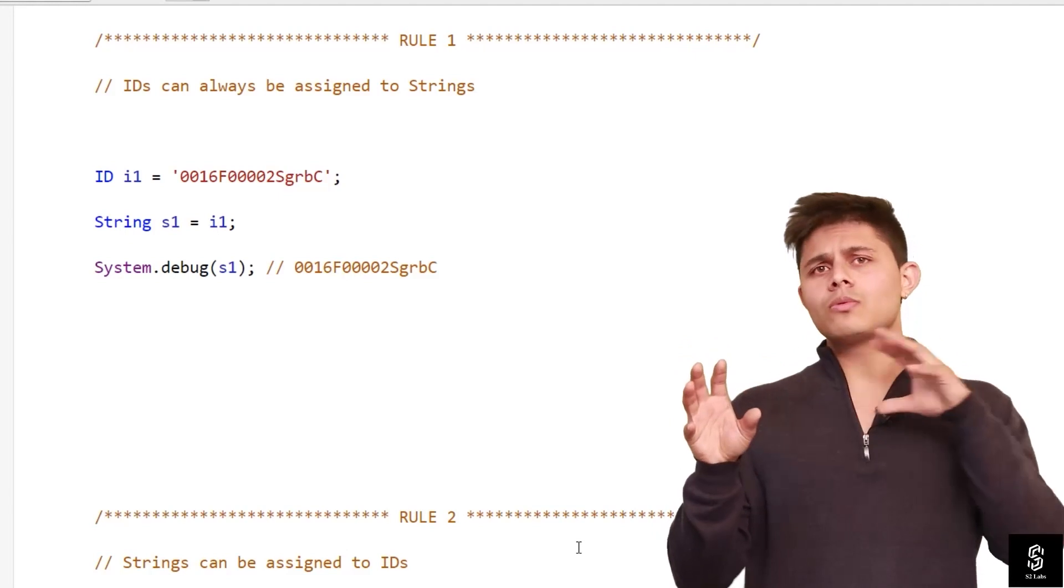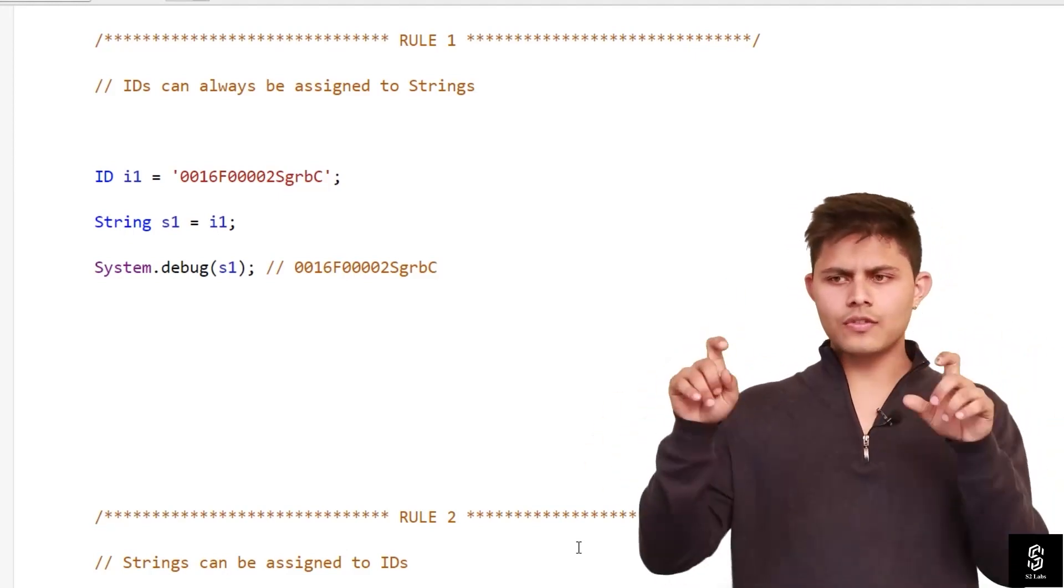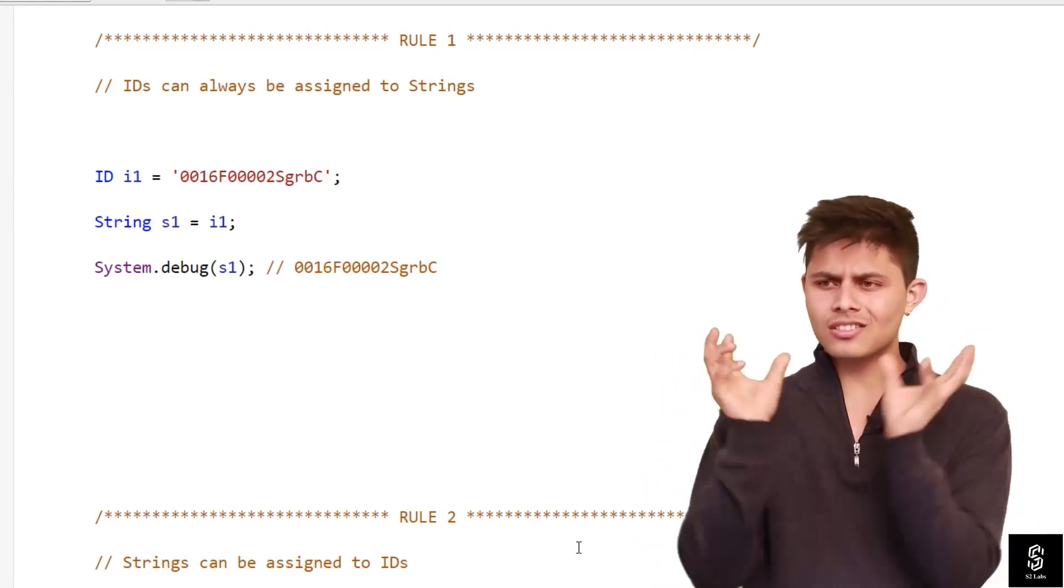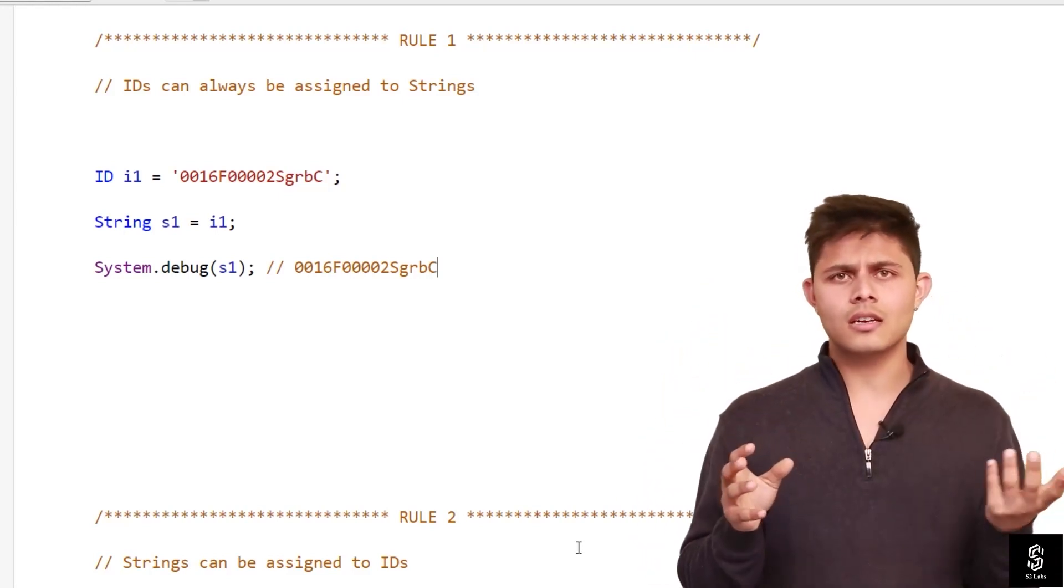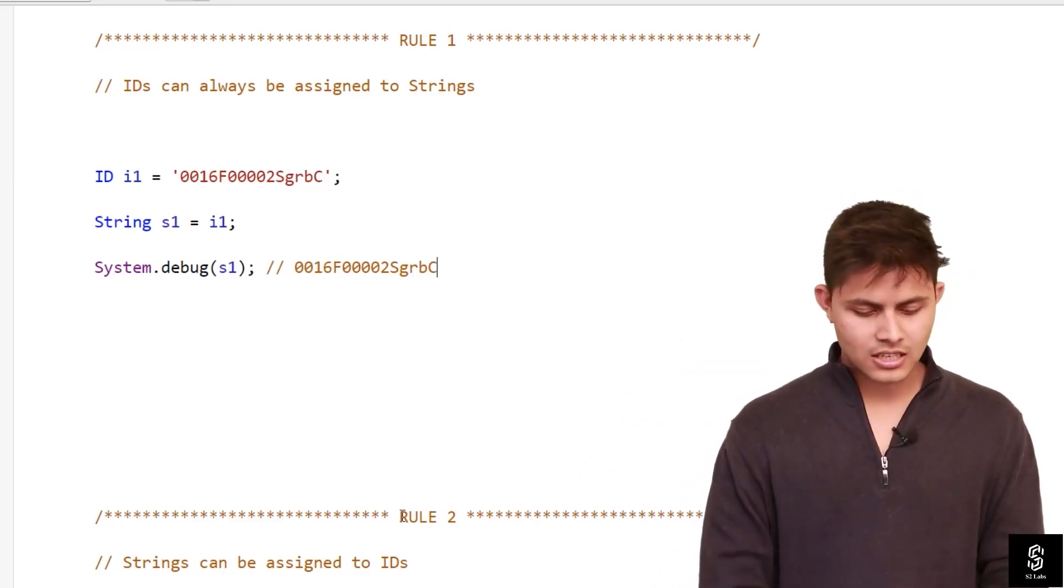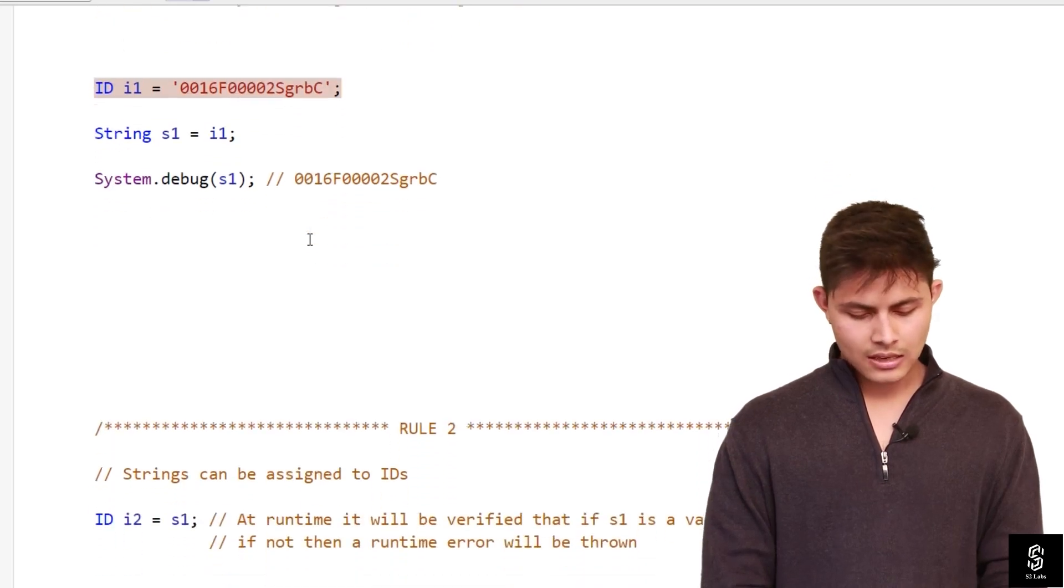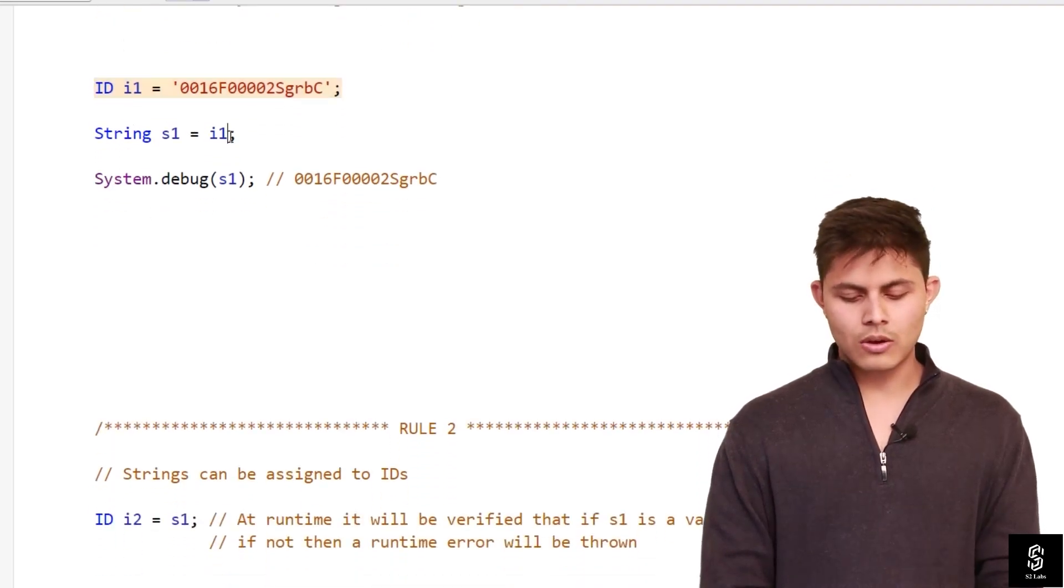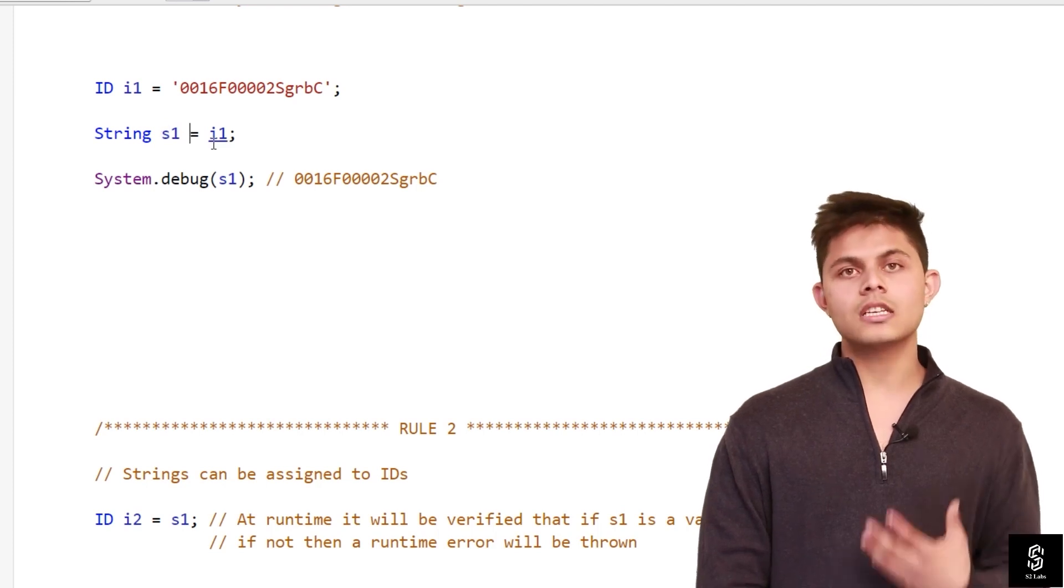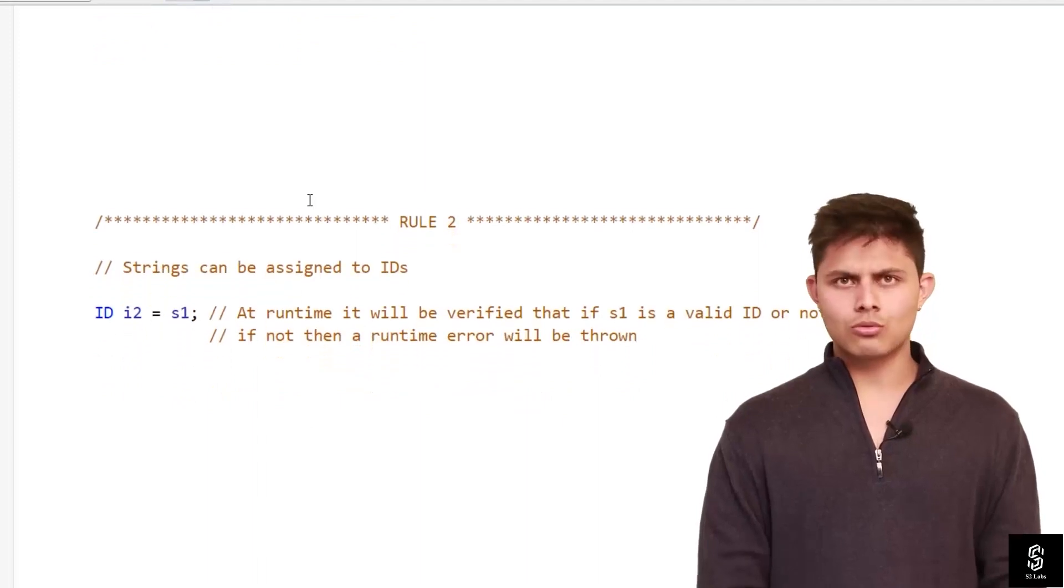An ID can always be converted into a string because at the end it is actually a string. Even if we are specifying an ID in the code, it's a string value we are storing into an ID. So IDs can also be stored into string. Here is an example: ID i1 equals to this ID, and then string s1 equals to i1. So I'm storing ID value inside a string variable and that is possible, which is allowed, no problem with that.